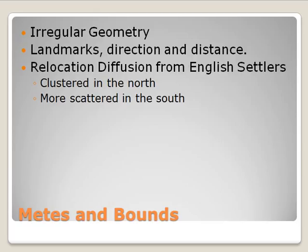When we talk about metes and bounds, there are three components: landmarks, direction, and distance. This system was diffused into the United States from English immigrants or English settlers. We see the occurrence of metes and bounds in the north and in the south of the U.S., primarily in the original 13 colonies.